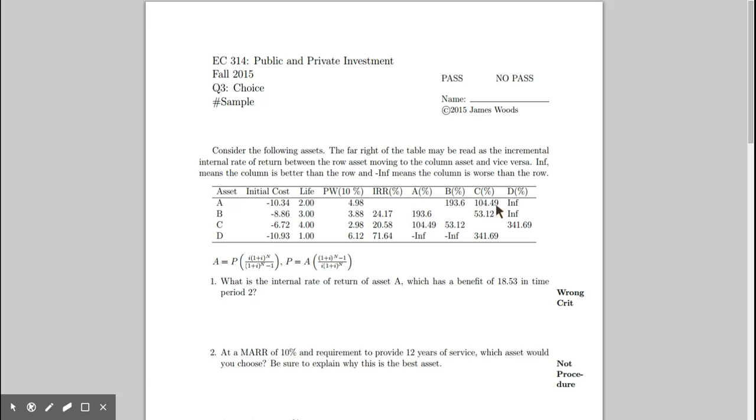If you look at this spot right here, which is 104.49%, this is the incremental internal rate of return of going from A to C. You'll notice that the matrix is symmetric. If you go from C to A, it also has 104.49%.